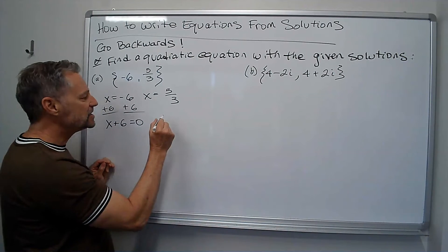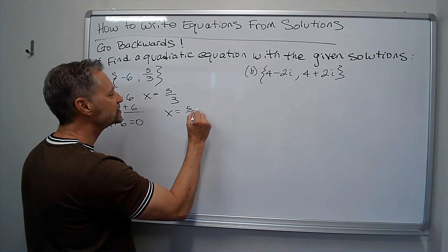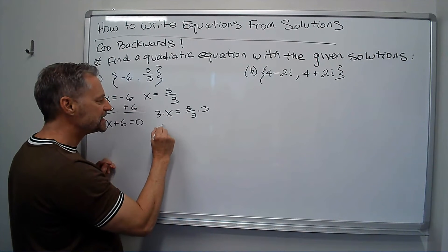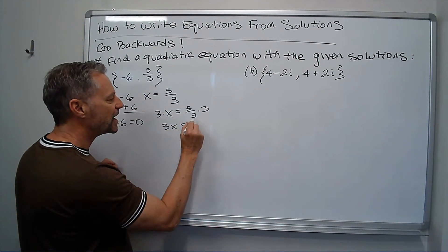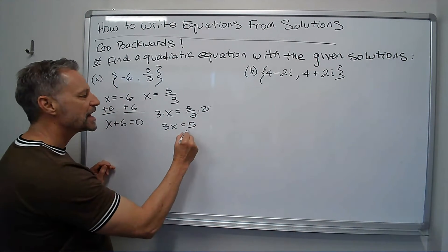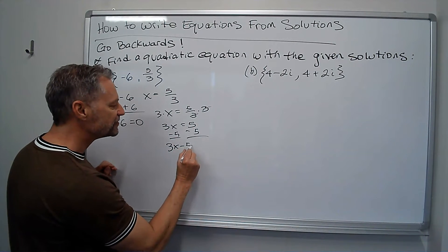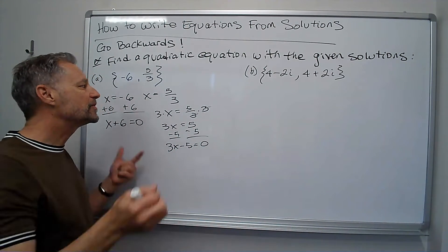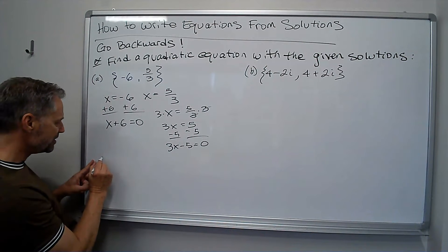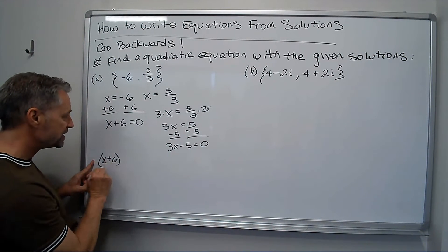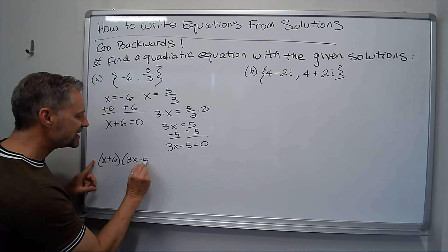And to get the other factor, if x equals five thirds, let's multiply both sides by three. We get three x equals five. Subtract the five, we must have had three x minus five equals zero. That was my other factor. Those must have been multiplied together. x plus six times three x minus five had to be zero.